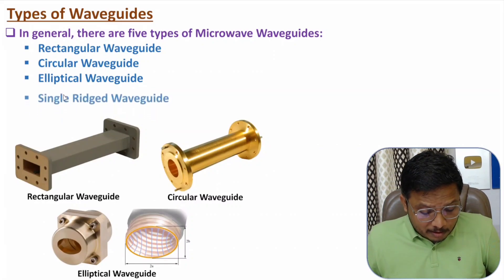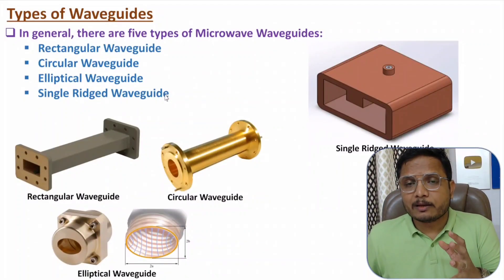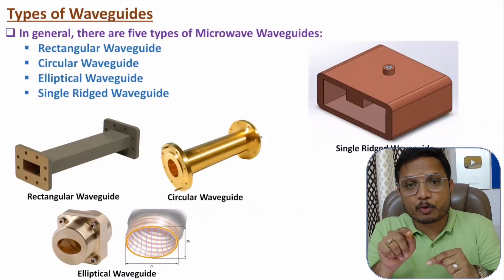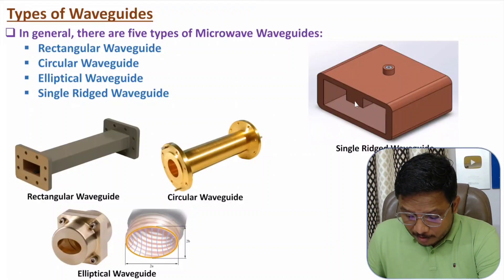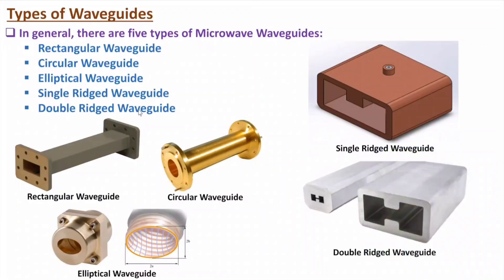The fourth type is the single ridge waveguide. It is similar to a rectangular waveguide but with one ridge provided inside it — you can observe the ridge in the structure shown. The fifth type is the double ridge waveguide. In the double ridge waveguide you can observe two ridges — this is one ridge and this is the second ridge — so there are two ridges, making it a double ridge waveguide.